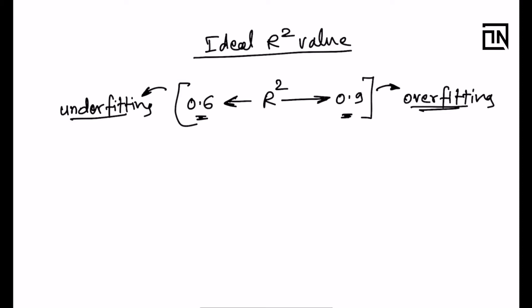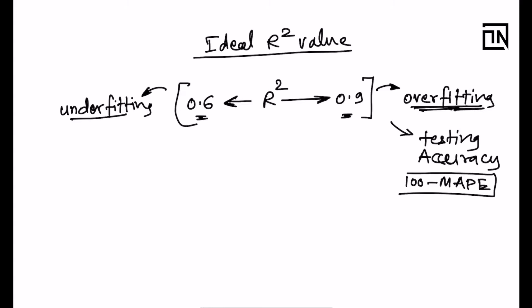A common mistake causing overfitting is including the target variable itself in the predictors, which gives a very good R squared because you are explaining the target with itself. To check for overfitting, look at testing accuracy, which for regression is measured using 100 minus MAPE, as discussed in a previous video.